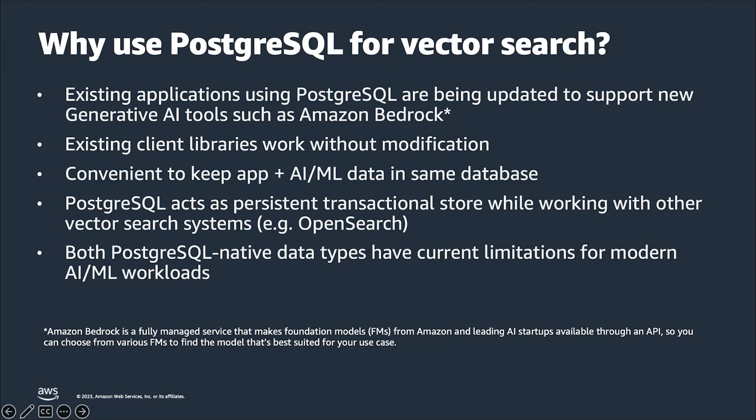Both Postgres native data types that have supported AI and ML workloads for a while — array and cube — have some limitations for supporting modern GenAI workloads. More specifically, the array data type does not support indexing for nearest neighbor queries, and the cube data type is limited to only 100 dimensions.